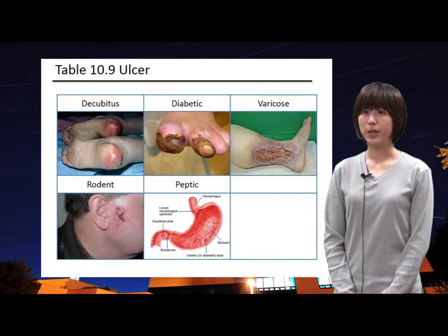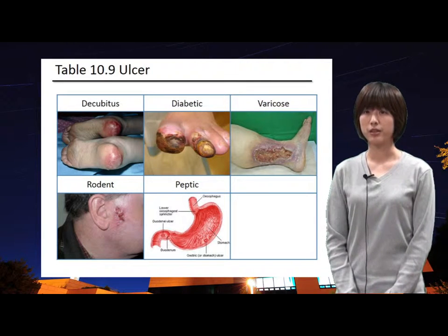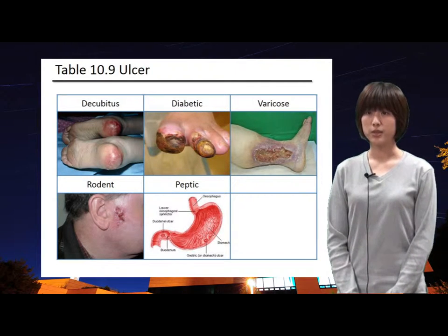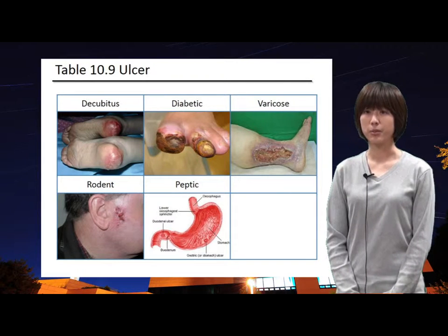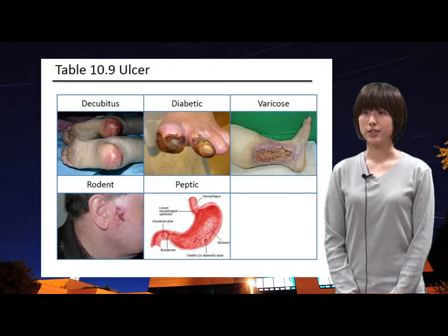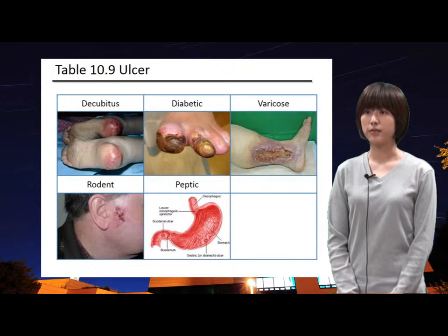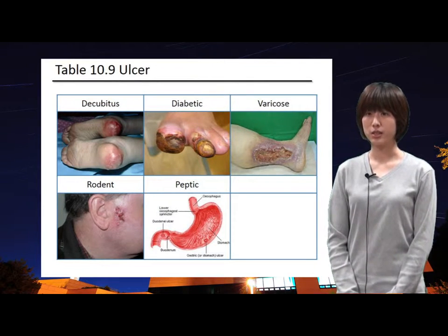Varicose ulcers are wounds thought to occur due to defective circulation in varicose veins, usually of the medial distal legs. They are the major occurrence of chronic wounds, occurring in 70 to 90% of leg ulcer cases. Rodent ulcer is an ulcerous cancer that usually affects the face, often called basal cell carcinoma. It is the most common cancer and rarely metastasizes, but it can cause significant destruction and disfigurement by invading surrounding tissues, so it is considered malignant.